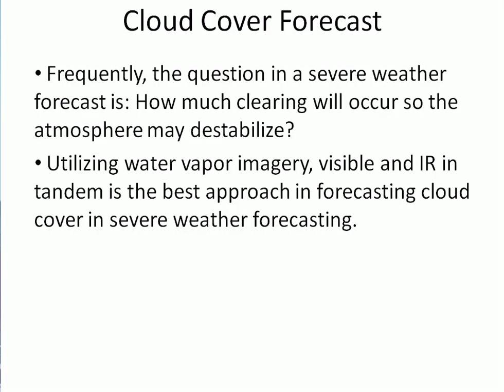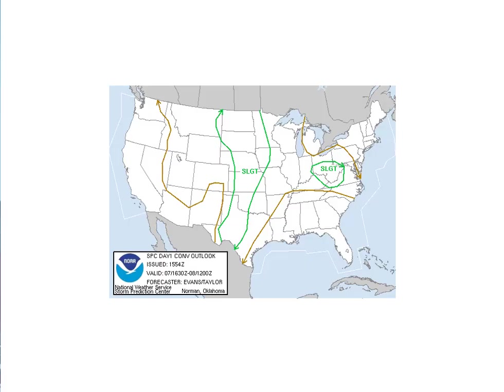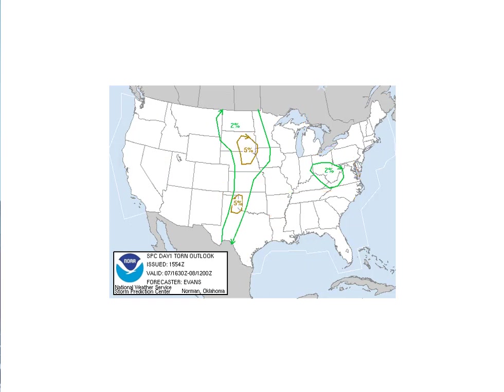The question in a severe weather forecast is how much clearing will occur so the atmosphere may destabilize. Utilizing water vapor, visible, and IR imagery in tandem is the best approach for forecasting cloud cover in severe weather forecasting. Rather than looking through many forecast model fields, we'll use the SPC forecast graphics to narrow in quickly on the region expecting severe weather, then assess the cloud cover forecast for that region. The probabilistic tornado forecast from SPC shows the eastern Texas Panhandle and western Oklahoma at a slightly higher risk of significant severe weather, in addition to portions of Nebraska and South Dakota.